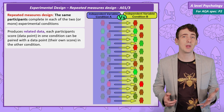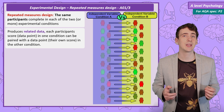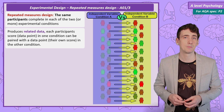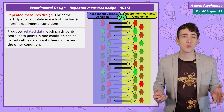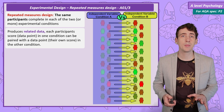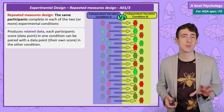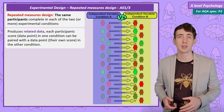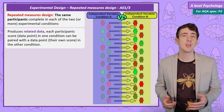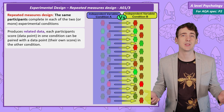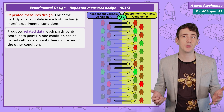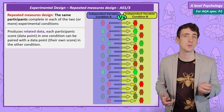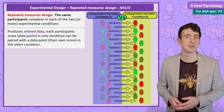Each data point in one condition has a related data point in the other condition — that's going to be important to remember later on when we get to the statistical testing video. Now we're comparing participants' scores to their own scores in the other condition, so there's no possibility that participant variables are responsible for measuring a difference between the conditions.